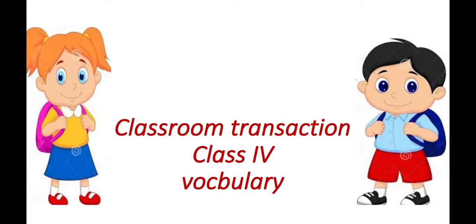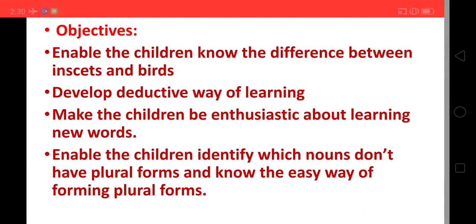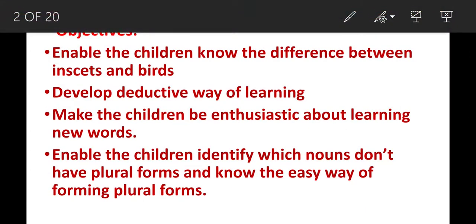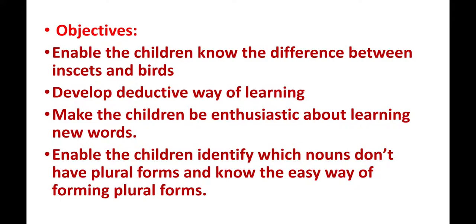I am going to share a classroom transaction for class 4, component vocabulary. My objectives are: enable the children to know the difference between insects and birds, develop a detective way of learning, make the children enthusiastic about learning new words, and enable the children to identify which nouns do not have plural forms and know the easy way of forming plural forms.